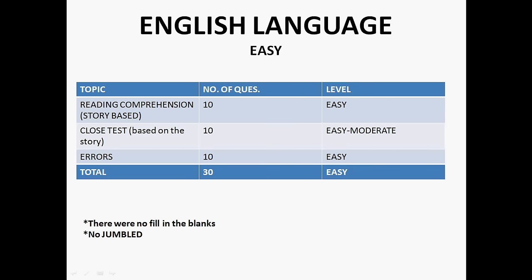English was easy. There were only 3 question types in English. One was reading comprehension, another was cloze test, and third one is errors. Reading comprehension and cloze test were story based, and there were 10 questions from RC, 10 from cloze test, and 10 from errors. Cloze test was easy to moderate and other 2 were easy.